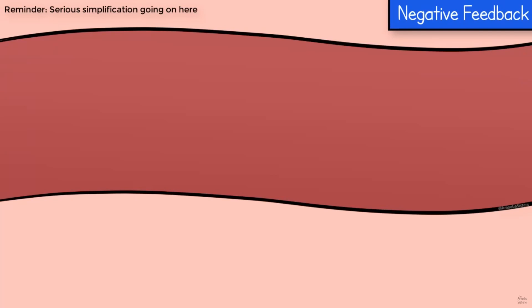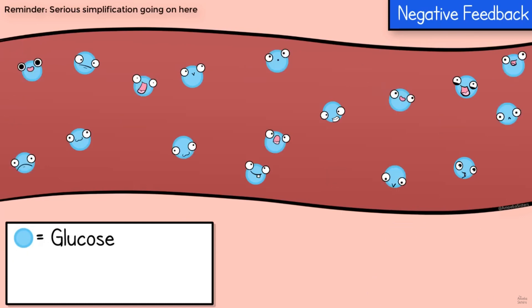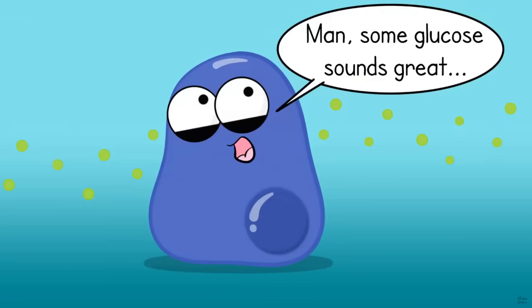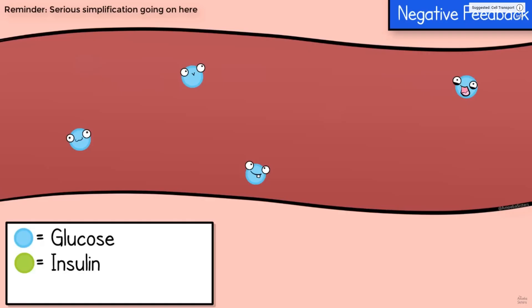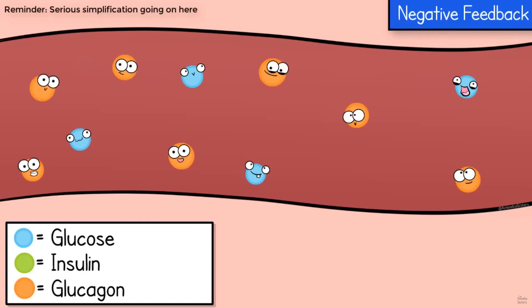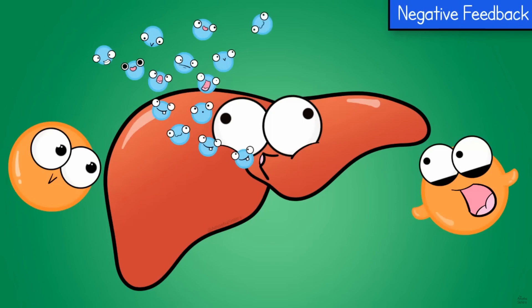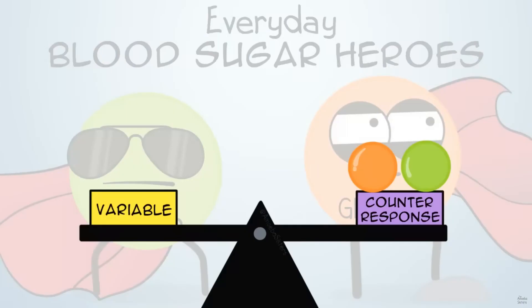Negative feedback also regulates your blood glucose. When blood sugar is too high, insulin is released, causing cells to take in glucose. If glucose is too low, glucagon is released, which causes the liver to release glucose into the blood. You can see how these are counteracting responses that keep homeostasis.